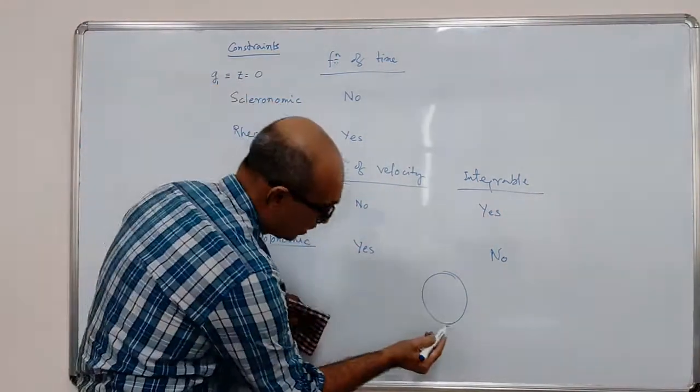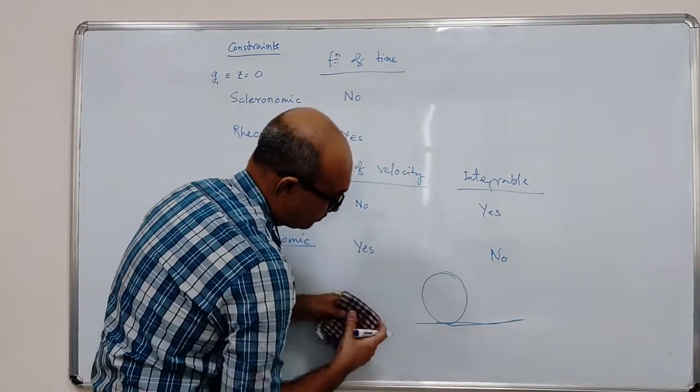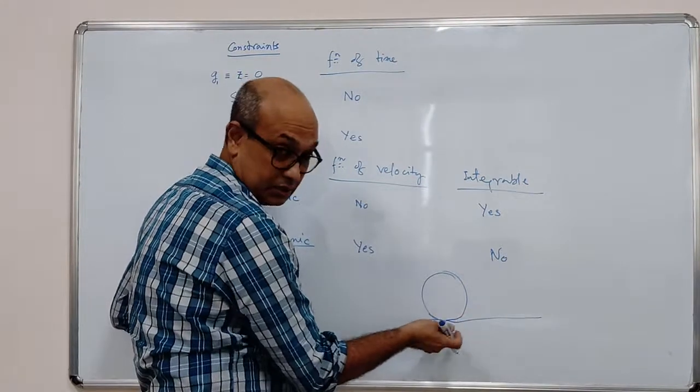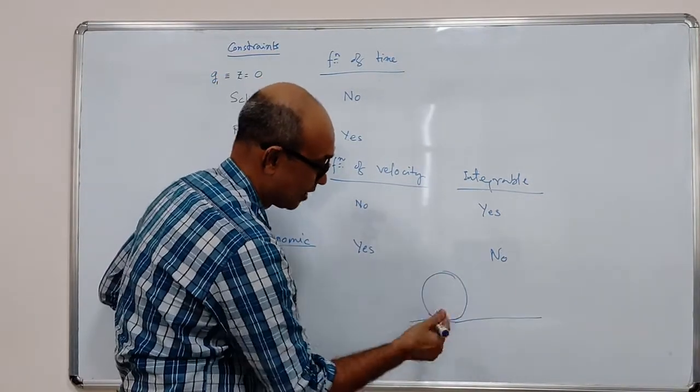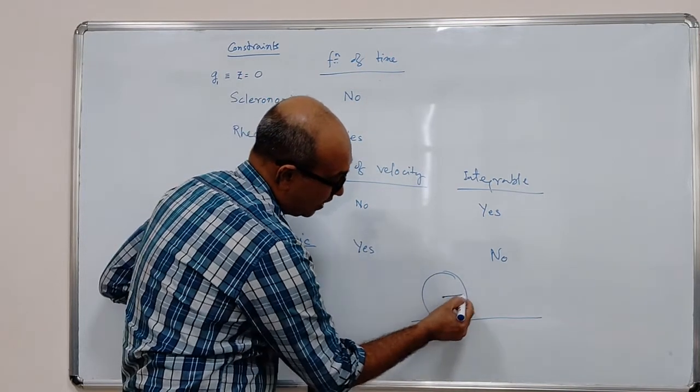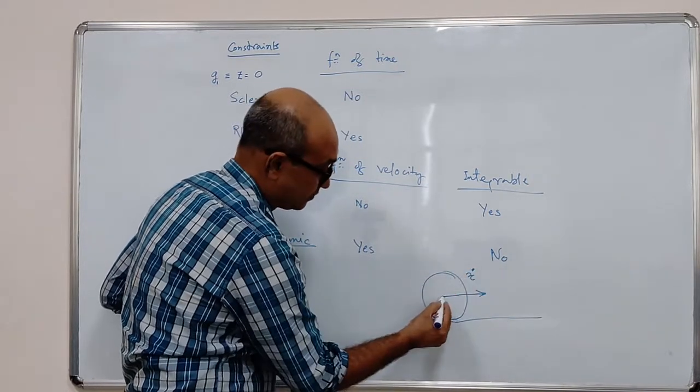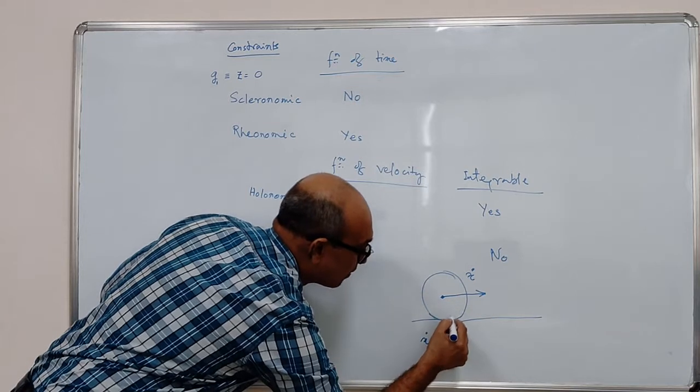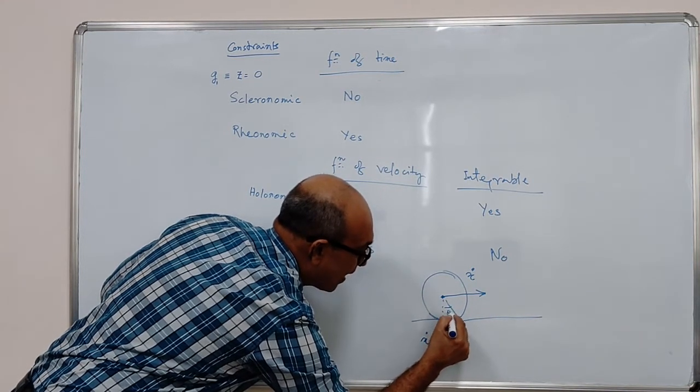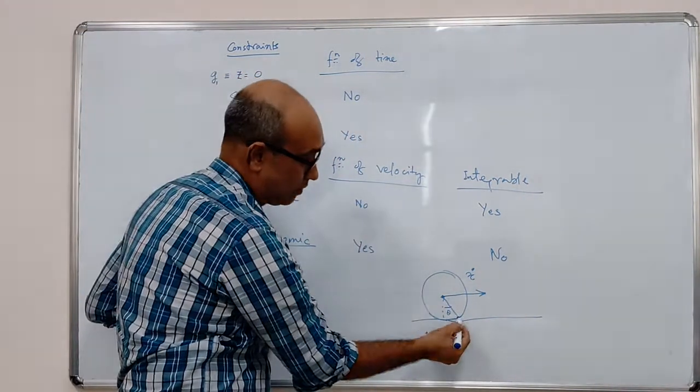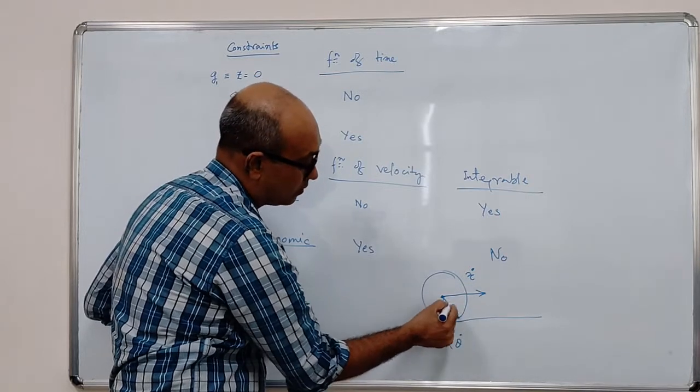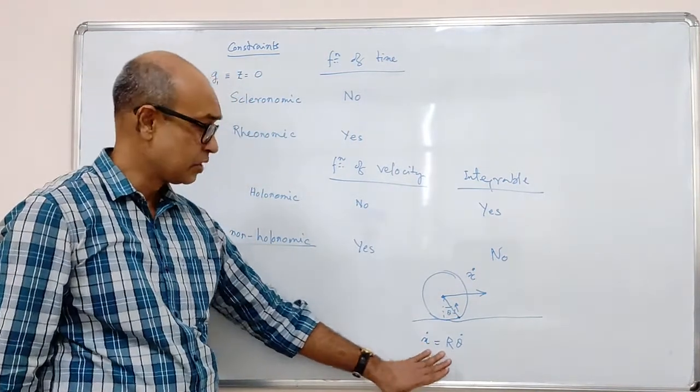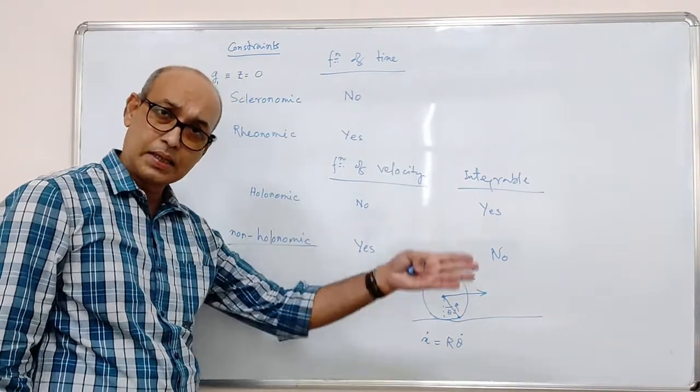If the disc is moving on a straight line, let's say it's moving along x. If the speed is x dot along this direction, then you have done countless examples. You'll be able to say x dot equal to r theta dot, where theta is the angle of some predetermined point on the periphery of this disc, and r is the radius of the disc. Then x dot is r theta dot.